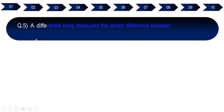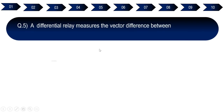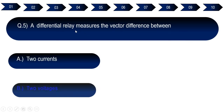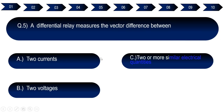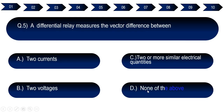Question number five: A differential relay measures the vector difference between. Option A: two currents. Option B: two voltages. Option C: two or more similar electrical quantities. Option D: none of the above. The right answer for question number five is option C — two or more similar electrical quantities.